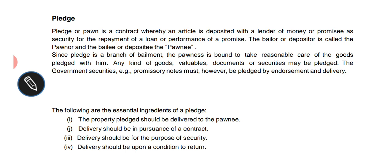Third exception: pledge by a person with a limited interest, given under Section 179. Generally, a person with a limited interest cannot make a pledge. However, Section 179 says that where a person pledges goods in which he has only a limited interest, the pledge is valid to the extent of that interest. The pawnee's rights are limited to the pledgor's interest.